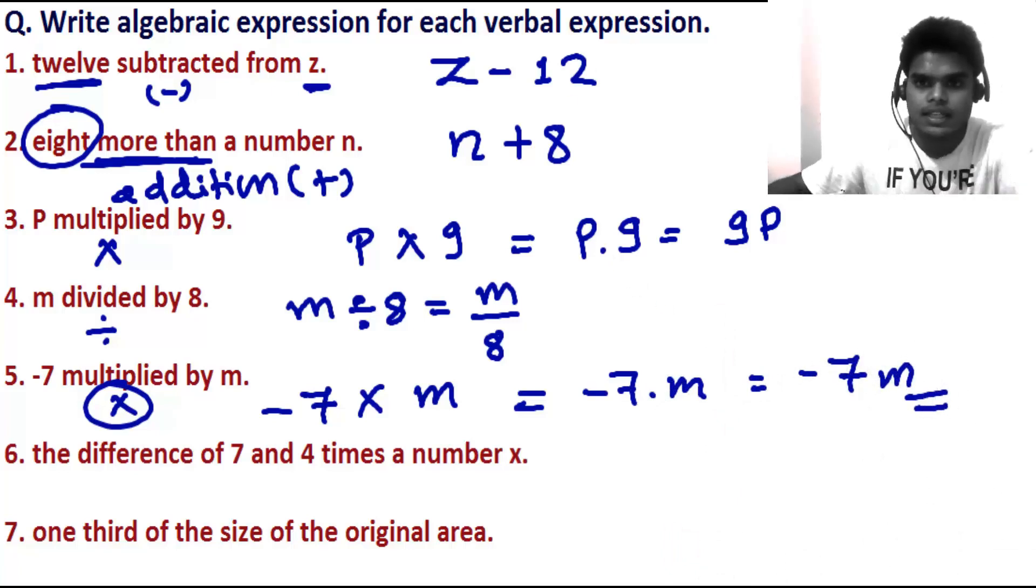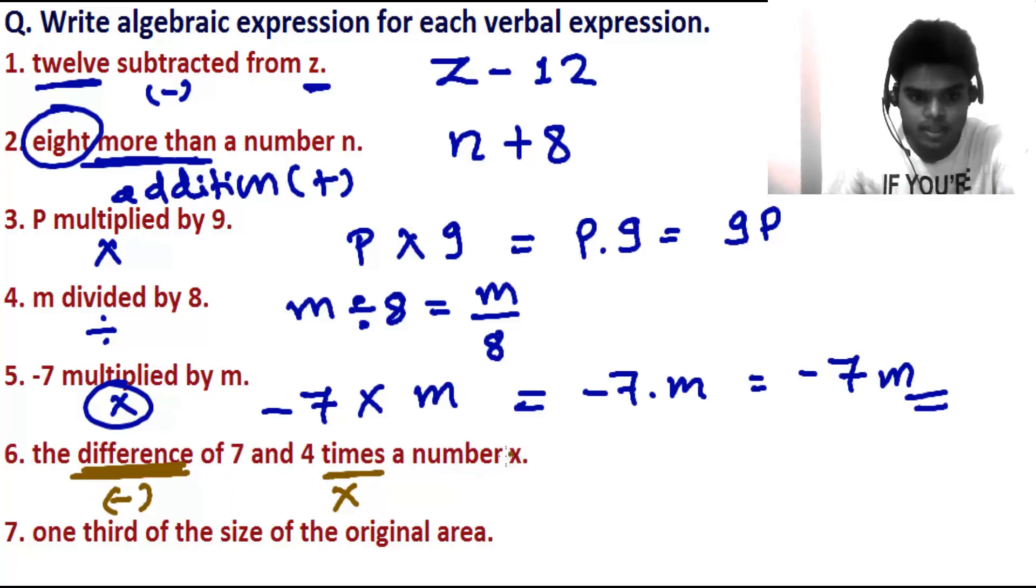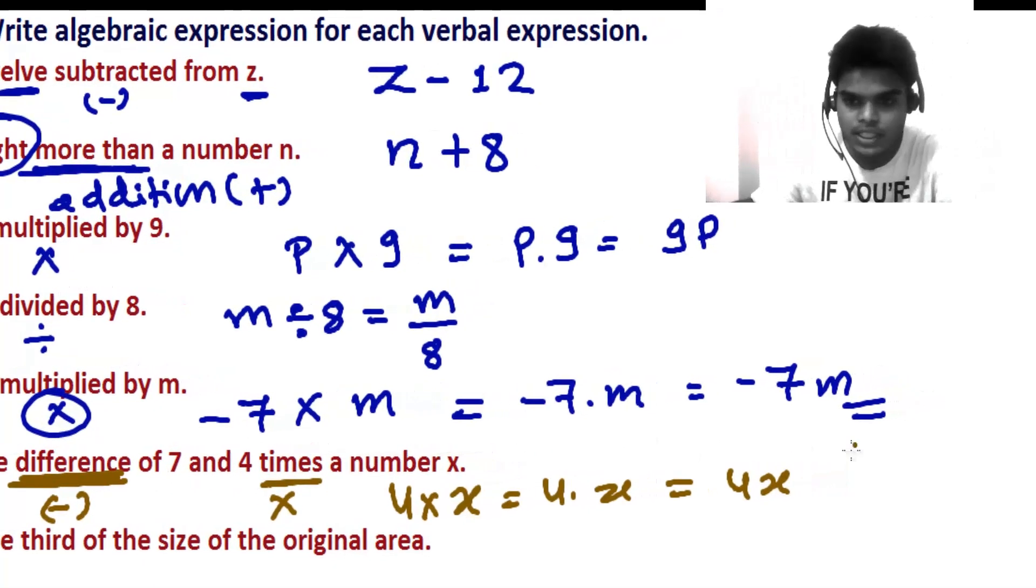Now here is something very interesting: the difference of 7 and 4 times a number. Difference, remember my friend, means subtraction, and times always represents multiplication. So 4 times a number is 4 times x, which you can also write as 4x. The difference of 7 and 4 times a number, so our answer is 7 minus 4x.